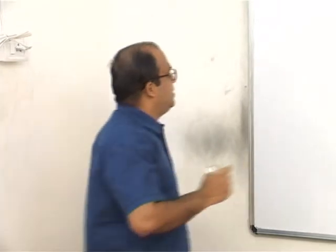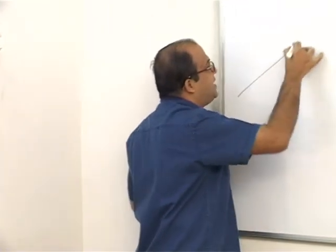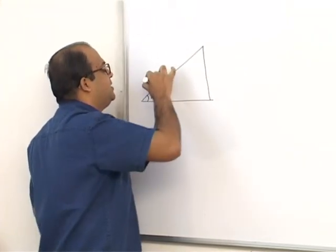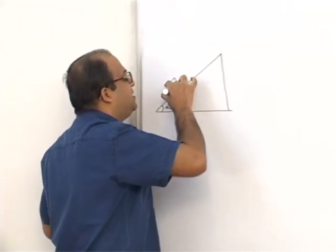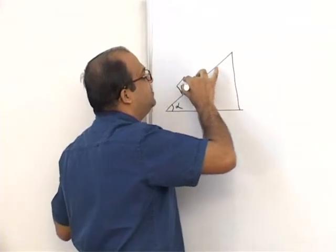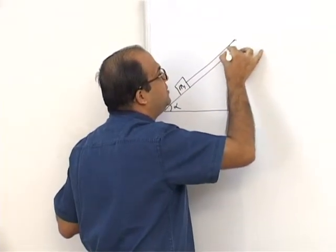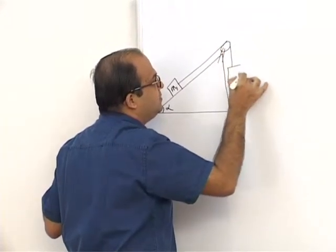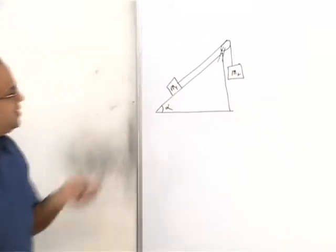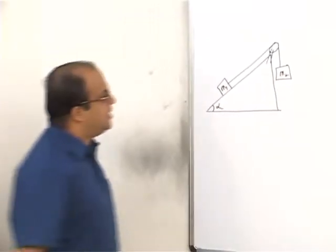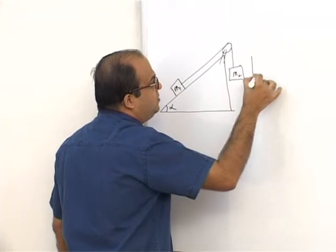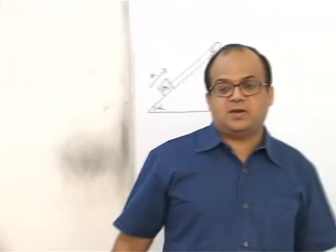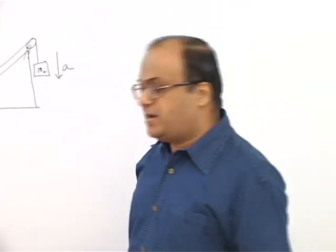Now let us consider a problem with an inclined plane. The angle of incline is alpha. Block M1 rests on the incline, there is a pulley at the top, and M2 hangs vertically. Assume M2 accelerates downward and M1 accelerates up the inclined plane. We need to find the acceleration and tension.